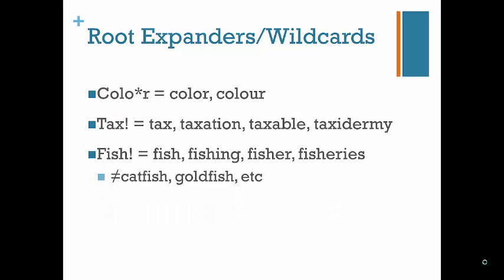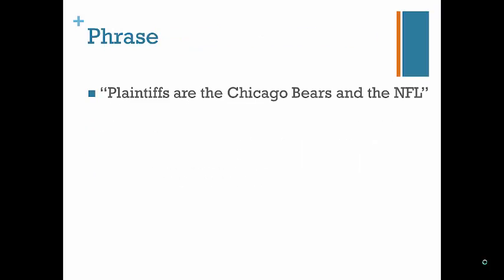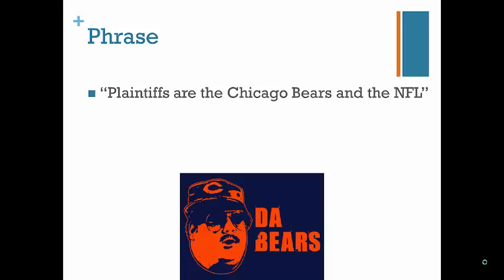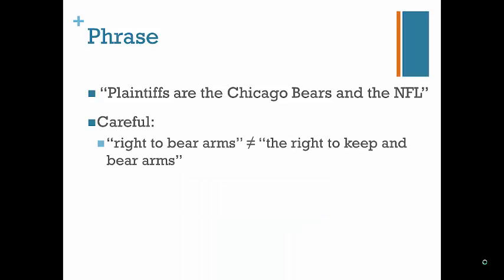Root expanders and wildcards enable you to account for spelling variations and for the use of words as different parts of speech. Google and natural language searches are typically able to account for those variations. Root expanders replace multiple characters to the right of the root word; most databases search for normal plural words without these. If you are looking for an exact phrase, most often you would search for that phrase enclosed in quotation marks — but be careful, a phrase search won't search for word or spelling variations.